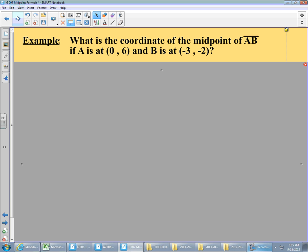The next example is going to be, what is the coordinate of the midpoint of line segment AB if A is at (0, 6) and B is at (-3, -2)? Now that's a little bit more wordy. Sounds a little bit different. The question is coming at you from a little bit different angle. But it's still a midpoint question.